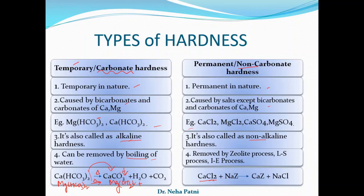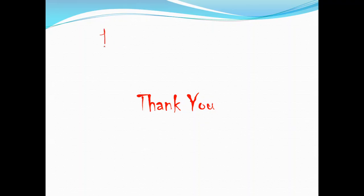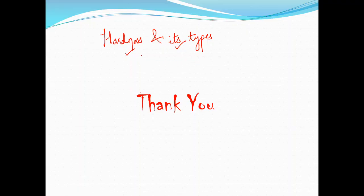For permanent hardness, the ions are quite stable and don't convert easily upon boiling. To remove permanent hardness, certain processes must be used: zeolite or permutit process, lime-soda process (where lime is calcium hydroxide and soda is sodium carbonate), and ion exchange resin process. Today we covered hardness and its types. In the next lecture I will focus on calculation of hardness.